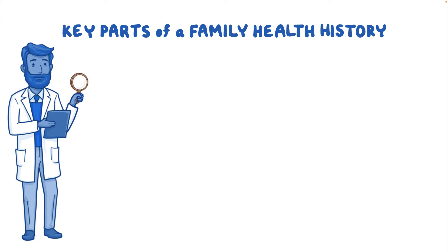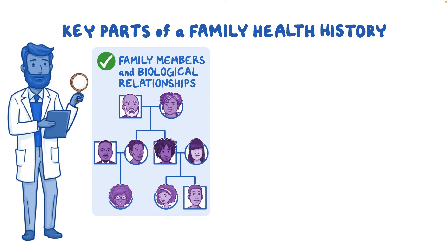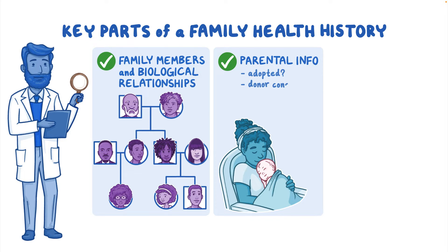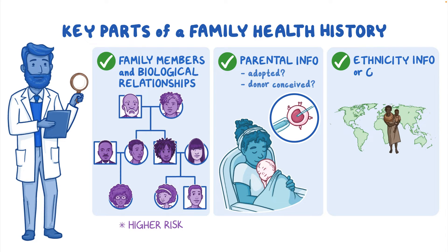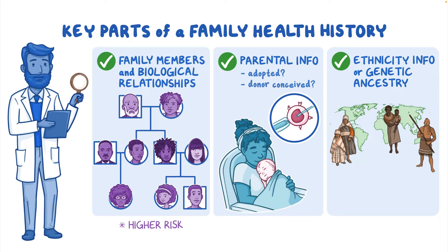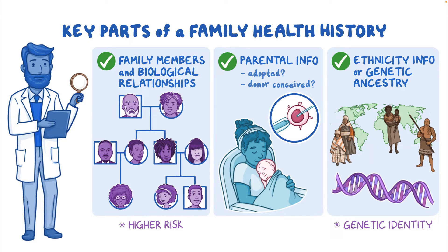A key piece to getting started is identifying the patient's family members and their biological relationships to them. Parental information, such as whether your patient was adopted or donor conceived, is also valuable. All of these pieces of information play an important role in understanding which conditions the patient is at higher risk of developing. Another piece of the family history to obtain is ethnicity information or genetic ancestry, which contributes to your patient's genetic identity and can help inform the interpretation of their family health history.